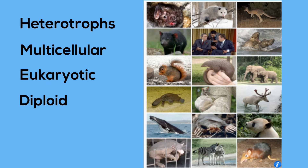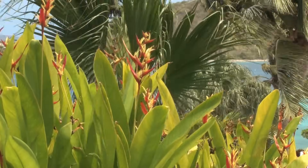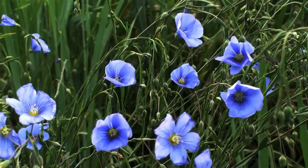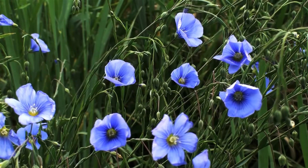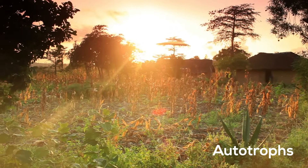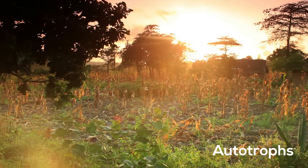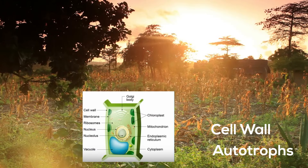The plant kingdom contains large trees, flowers, and other plants found around you. Plants are autotrophs, meaning they can get their food from the sun through photosynthesis. They contain a cell wall, and plants are multicellular.